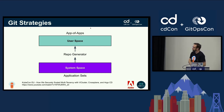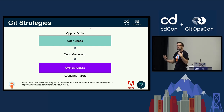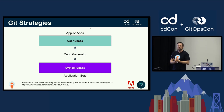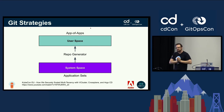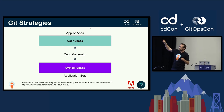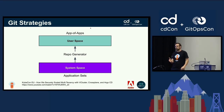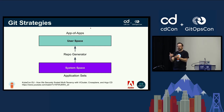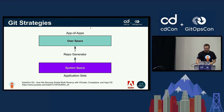From a Git perspective, you can mix and match application sets and app of apps. At Codefresh, we use application sets to generate each customer Argo CD instance, then bootstrap an app of apps into each one so the user shows up with a Git repo and can just throw their apps at it. The client Argo CD instance picks them up and deploys them. They can operate it entirely from Git if they want to.